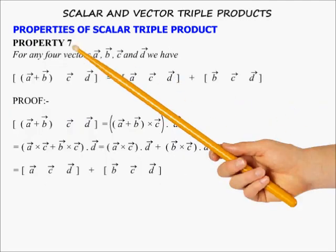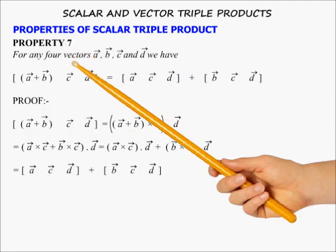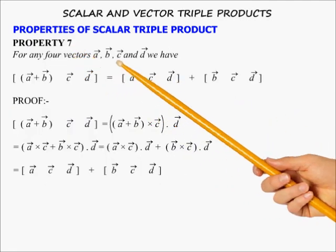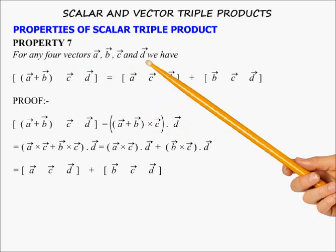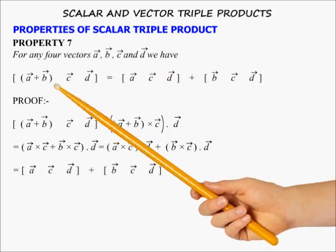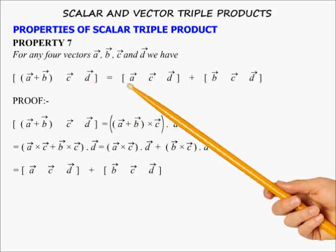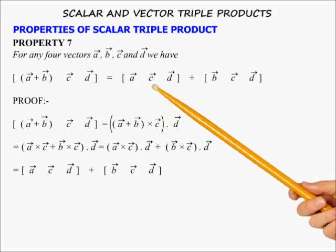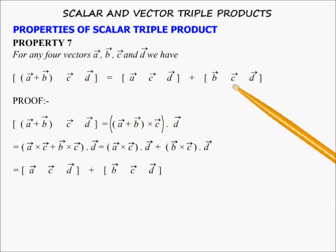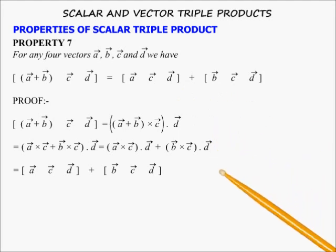Property 7: For any four vectors a, b, c and d, the triple product [a+b, c, d] equals [a, c, d] plus [b, c, d]. This distributivity property can be easily proved using the properties established so far.